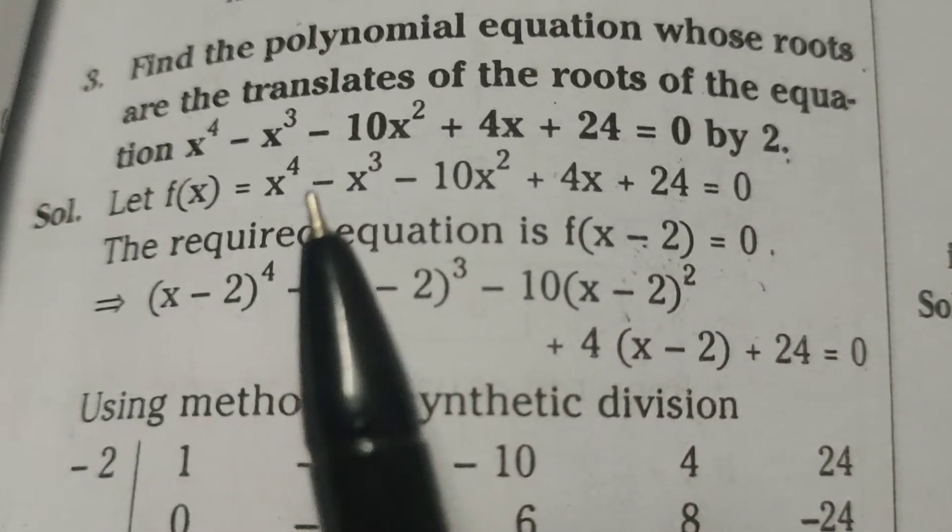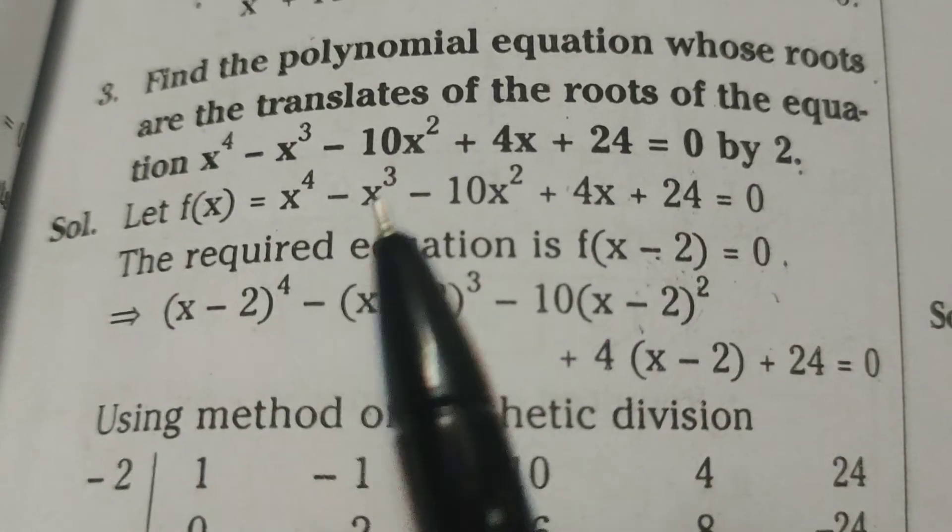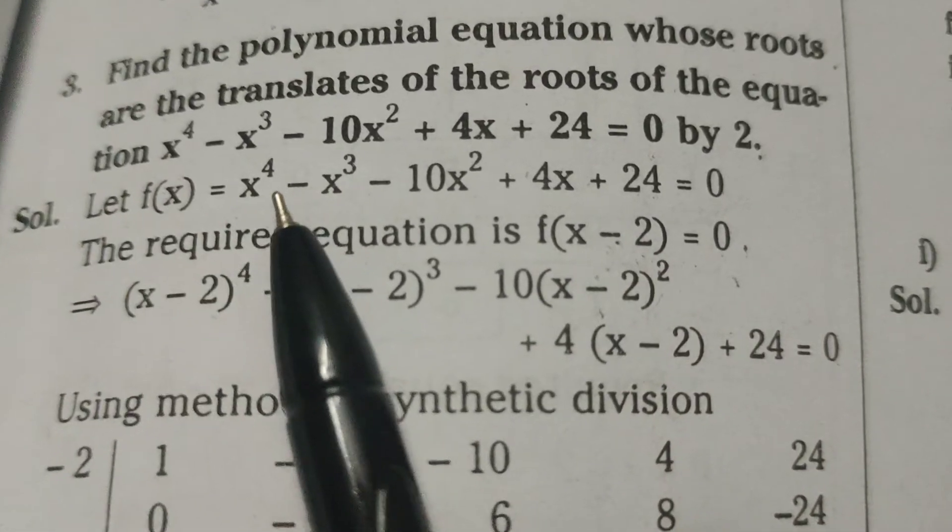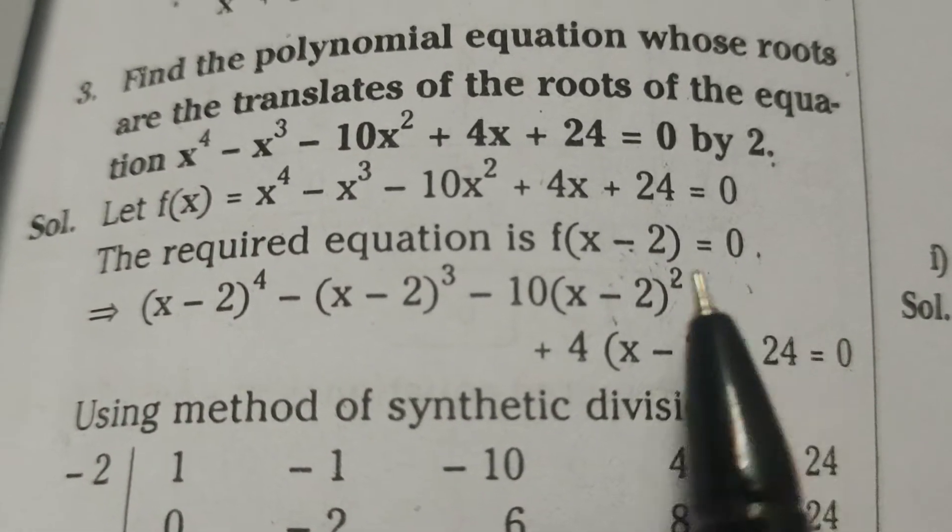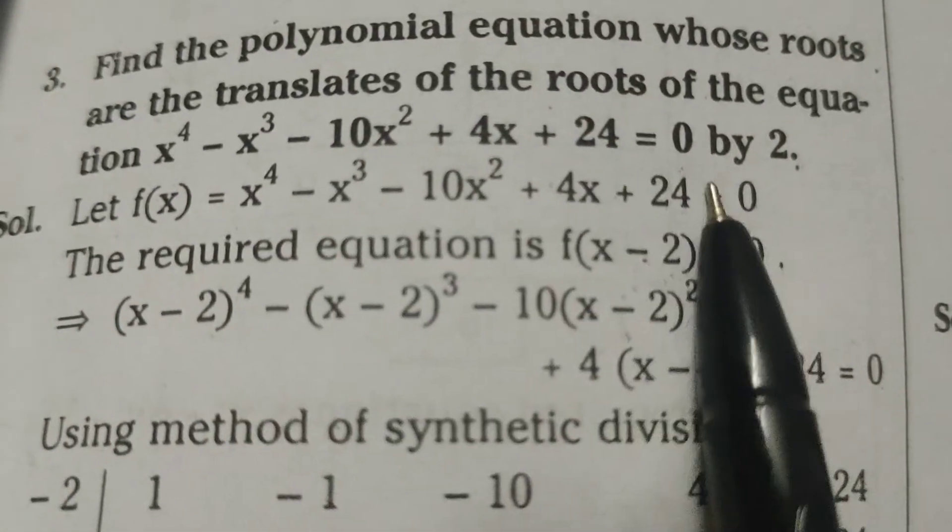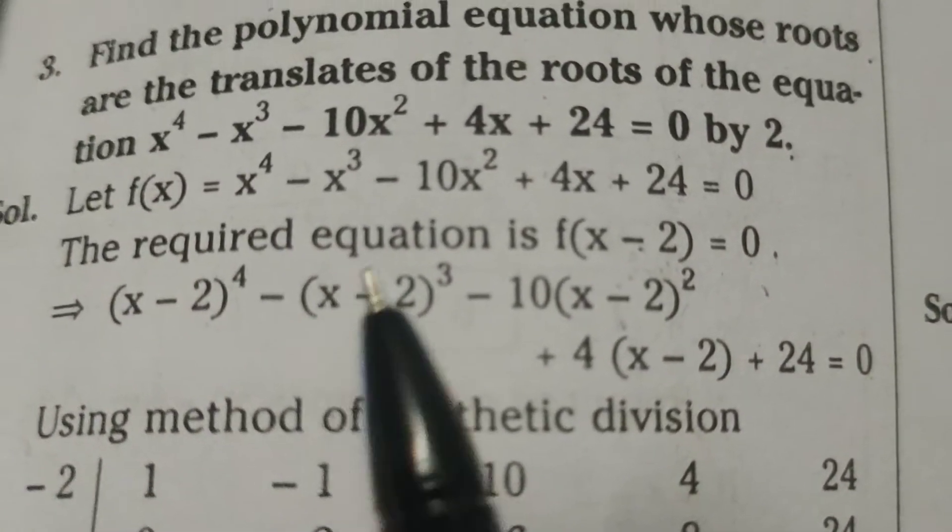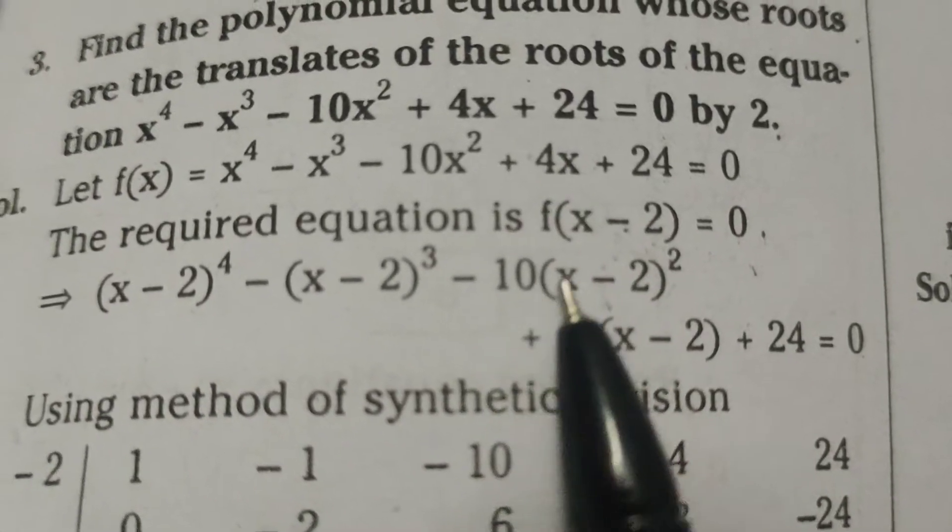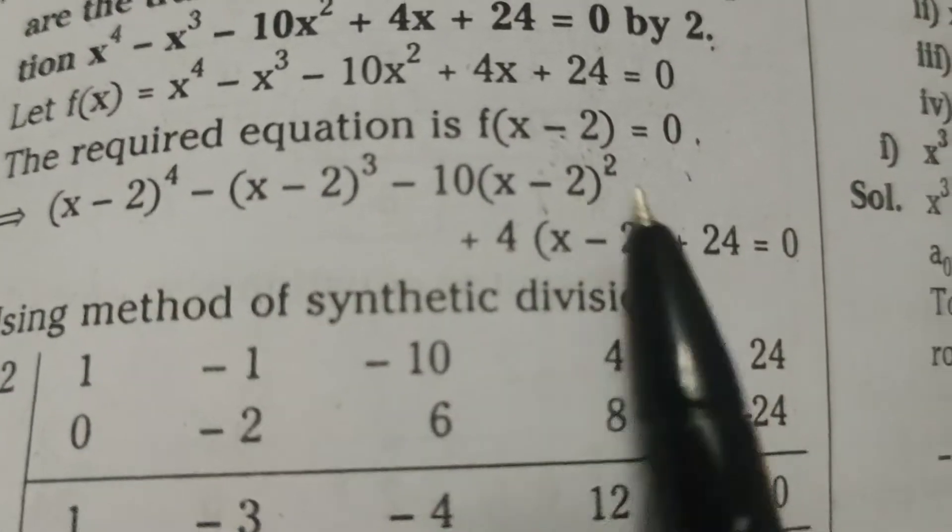So x = 2 is one of the roots of this equation. The required equation is f(x - 2) = 0.